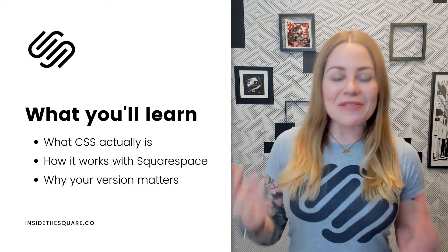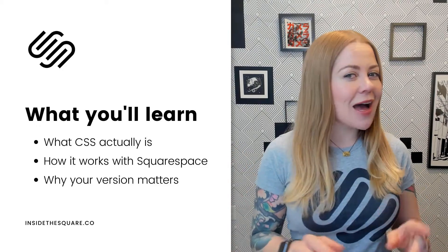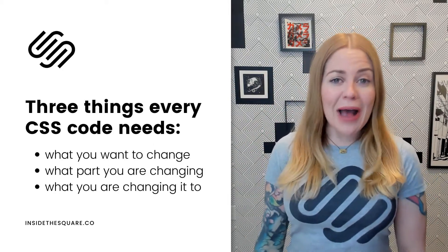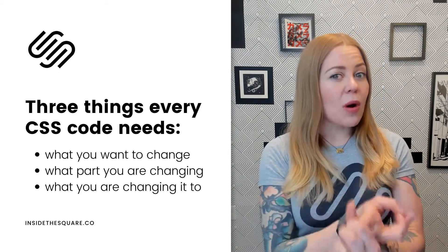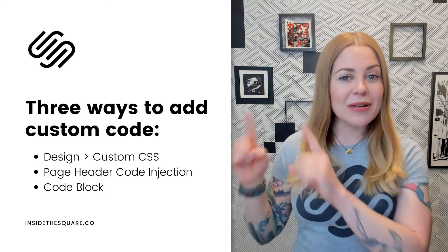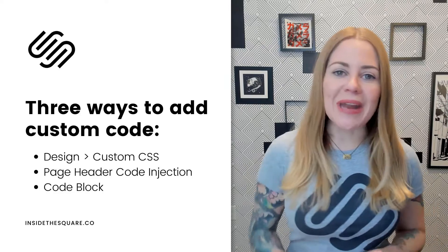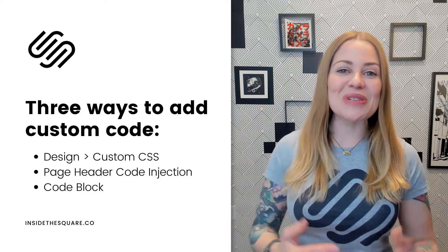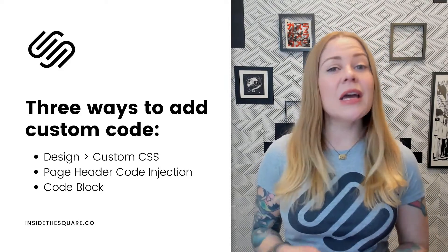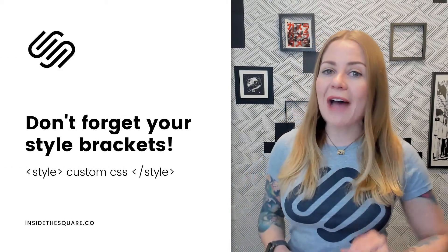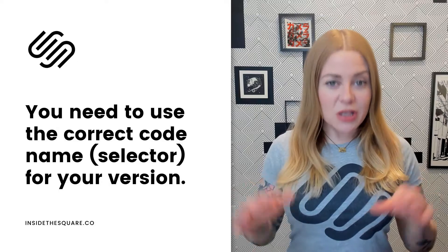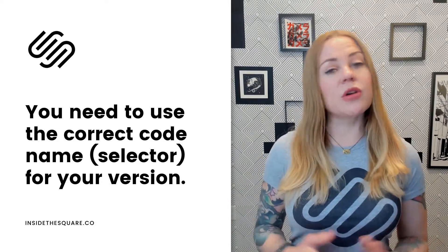Let's do a quick recap. CSS stands for Cascading Style Sheet and it changes the look of your Squarespace website. You tell the browser three things: the thing you want to change, what you want to change about it, and what you want to change it to. In Squarespace, you can install CSS on every page by going to Design > Custom CSS, or make changes to an individual page using page header code injection, or to an individual blog post, product, event, or project using a code block. For page header code injection or a code block, put your code between style brackets. And make sure you're using the right code for the right version or theme depending on when you built your website.